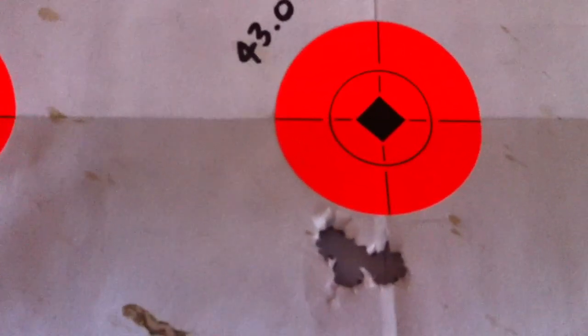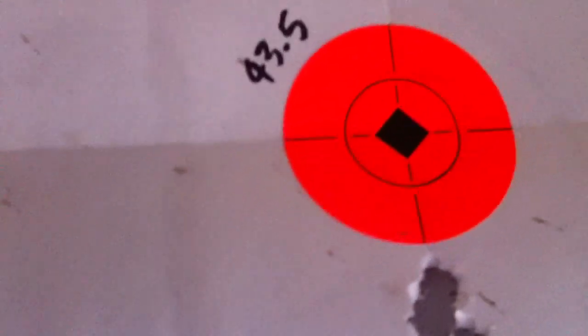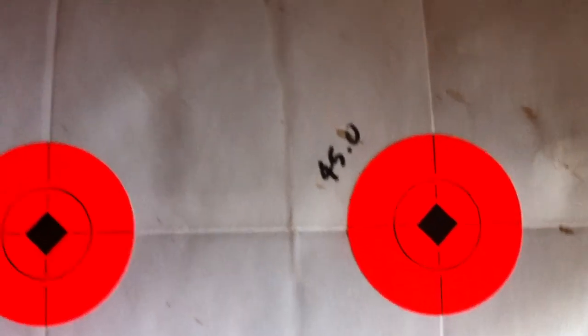And here's 43 grains. All three touching. It's 43.5. Pretty much all three touching. Then down to 44 grain. Three shots. Here's three shots of 44.5 grain. And this is three shots of 45 grain.